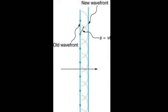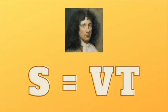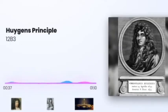Huygens' principle applied to a straight wavefront shows that each point on the wavefront emits a semicircular wavelet that moves a distance based on the propagation speed. In simpler words, a wavefront is the long edge that moves — for example, the crest or the trough. Each point of the wavefront emits a semicircular wave that moves at the propagation speed V. These are drawn so that they have moved a distance S = V × T, where T is time. The new wavefront is then aligned tangent to the wavelets, and this is where we expect the wave to be at time T later.